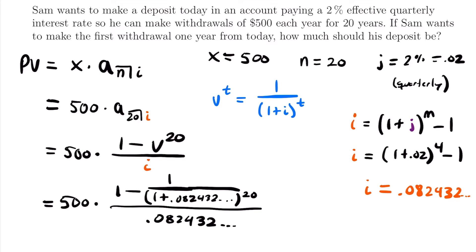When you plug this into your calculator, save your value of the interest rate to get the most accurate result. Try to keep as many decimals as possible — don't round this value or you'll get an incorrect answer. The present value works out to $4,821.48. That's the amount Sam needs to deposit today to make withdrawals of $500 each year for 20 years.